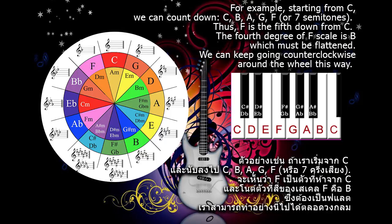For example, starting from C, we can count down: C, B, A, G, F. Thus, F is the fifth down from C. The fourth degree of the F scale is B, which must be flattened. We can keep going counterclockwise around the wheel this way.